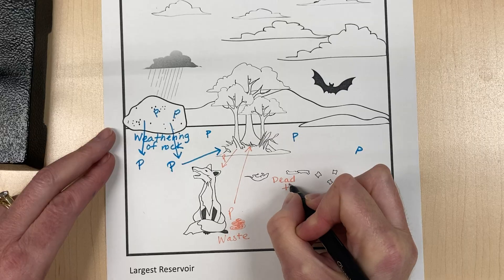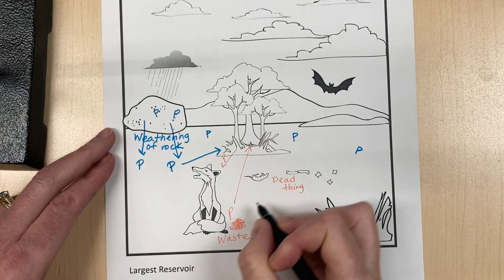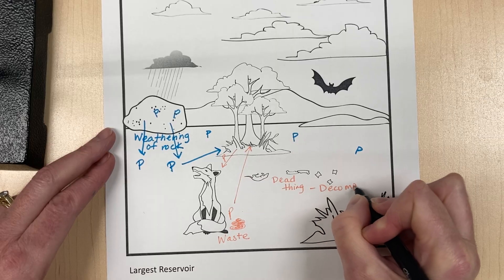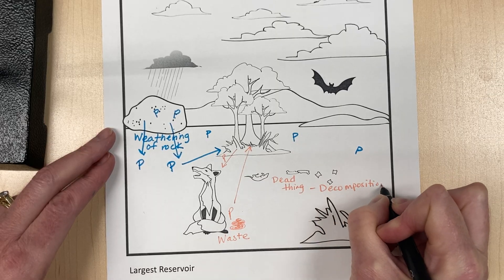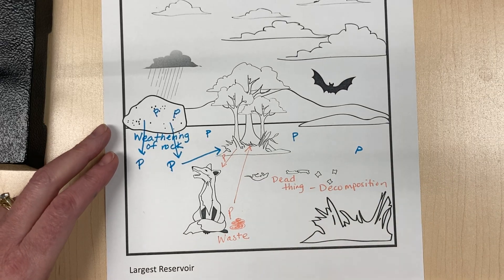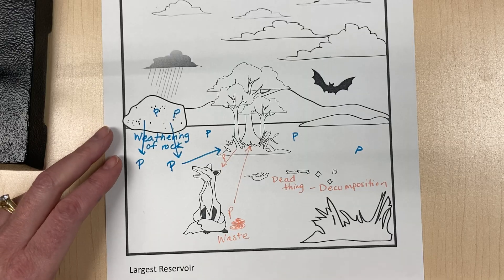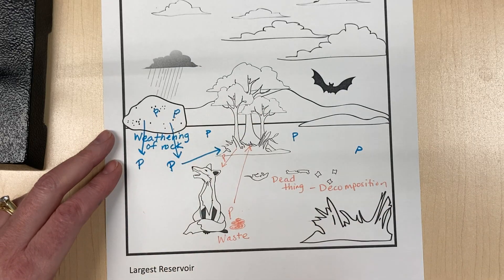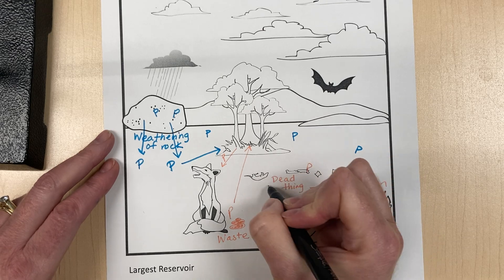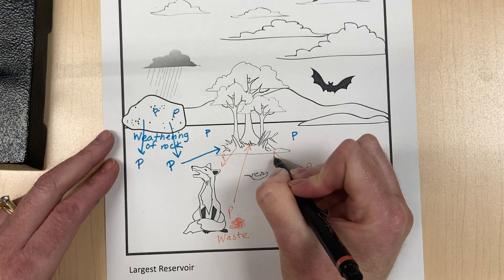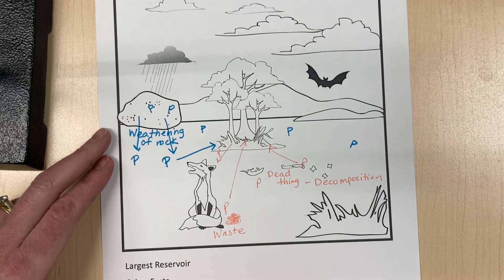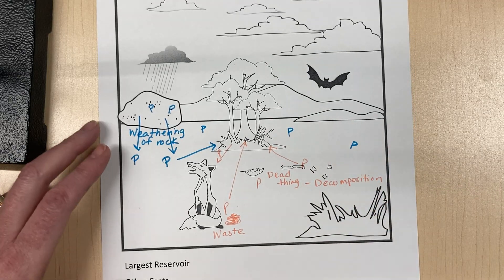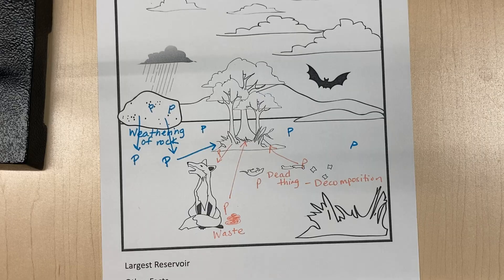Dead plants and dead animals also have phosphorus. Decomposition releases phosphorus, nitrogen, carbon, and all kinds of things back into the ecosystem. Plants absorb that phosphorus for root growth and stem growth.